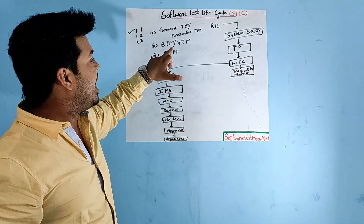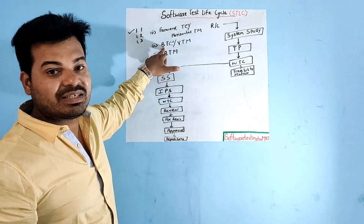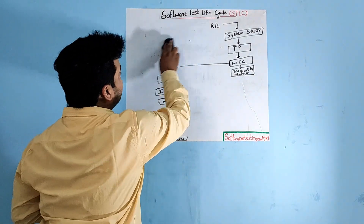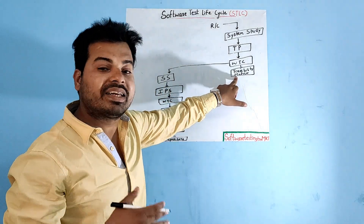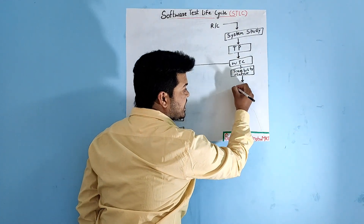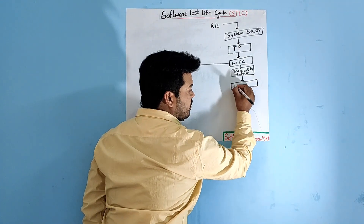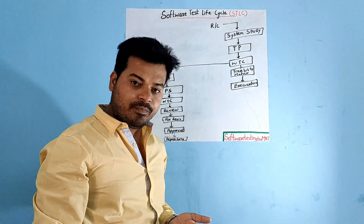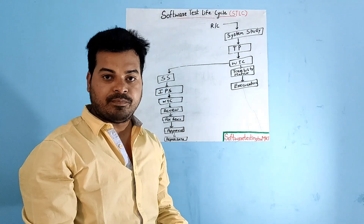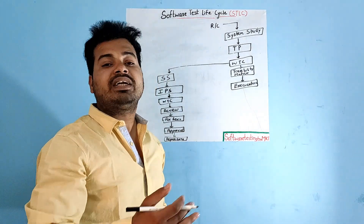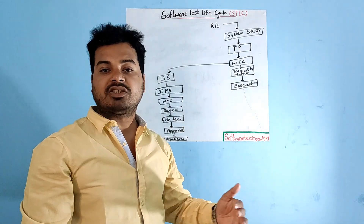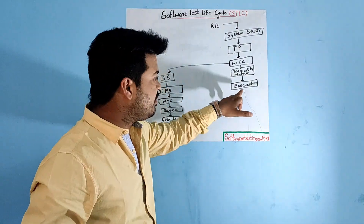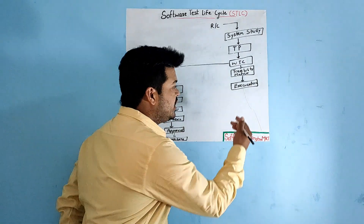Once the traceability matrix is done, we proceed to test case execution. Test case execution means you have a set of test cases and an application — by looking at each test case, you test the application and mark each test case as pass or fail. That is test case execution.